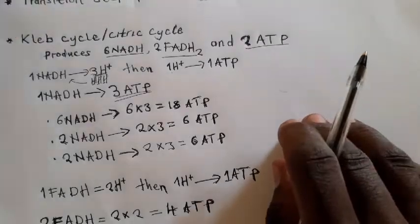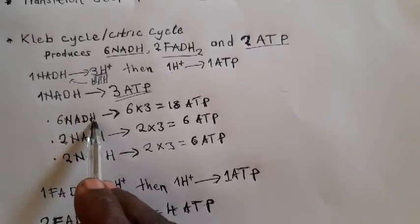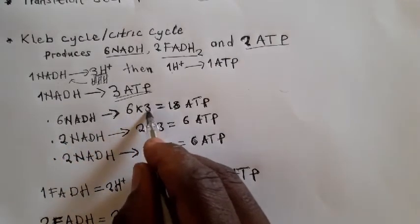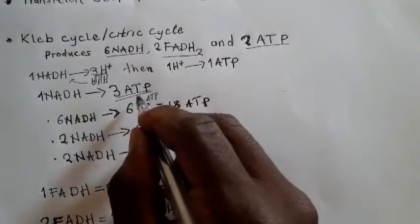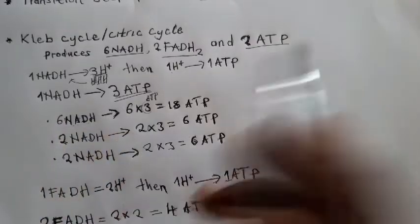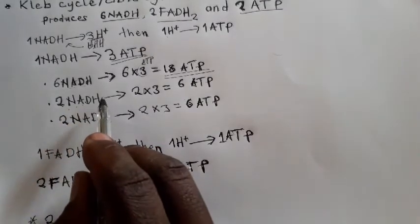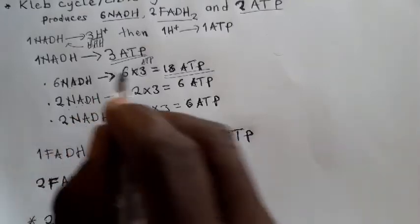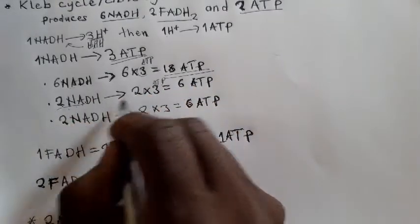From the Krebs cycle we have 6 NADH. We multiply 6 times 3 — since one NADH produces 3 ATP — giving us 18 ATP. Then from glycolysis we have 2 NADH, and 2 times 3 gives us 6 ATP.